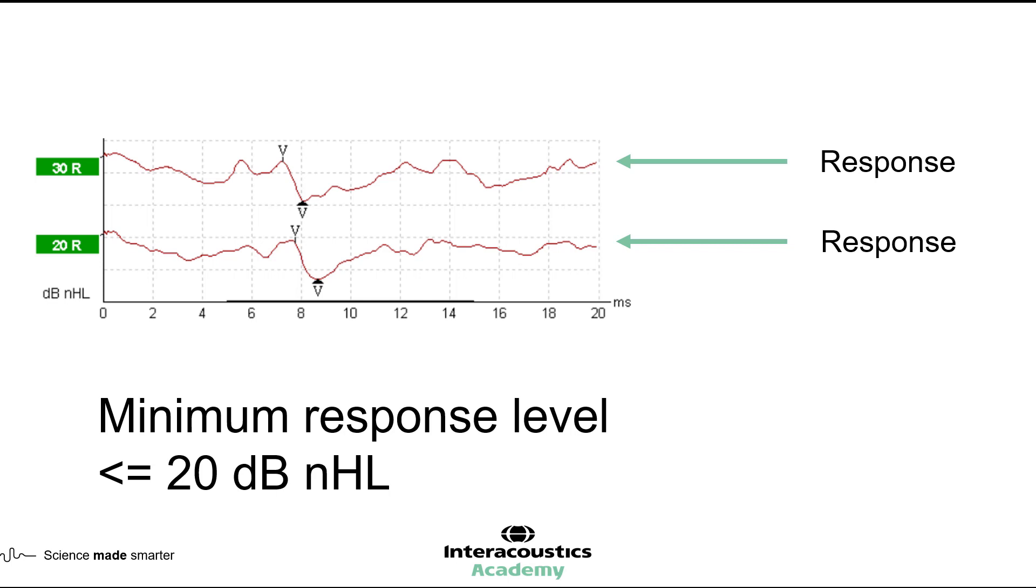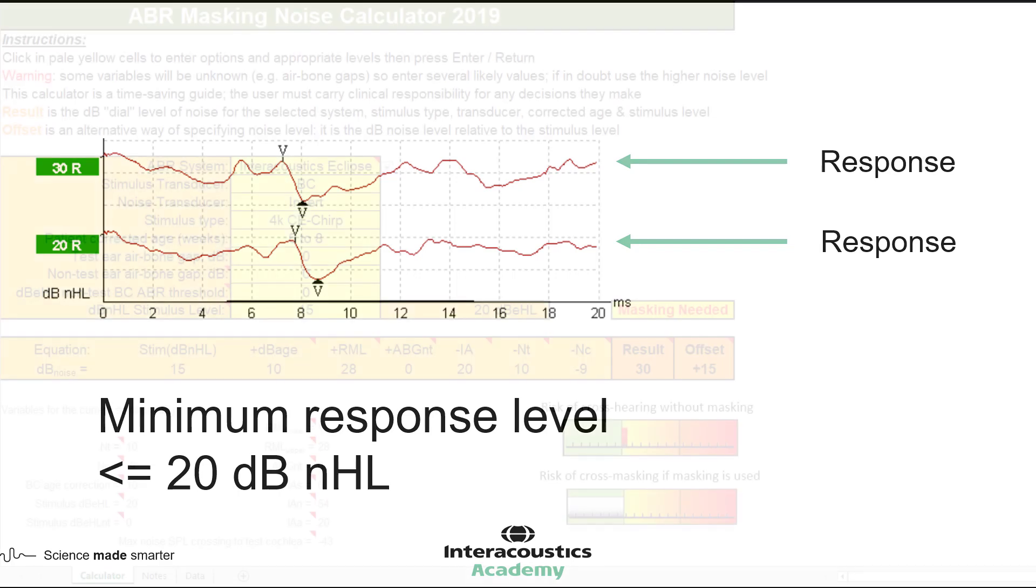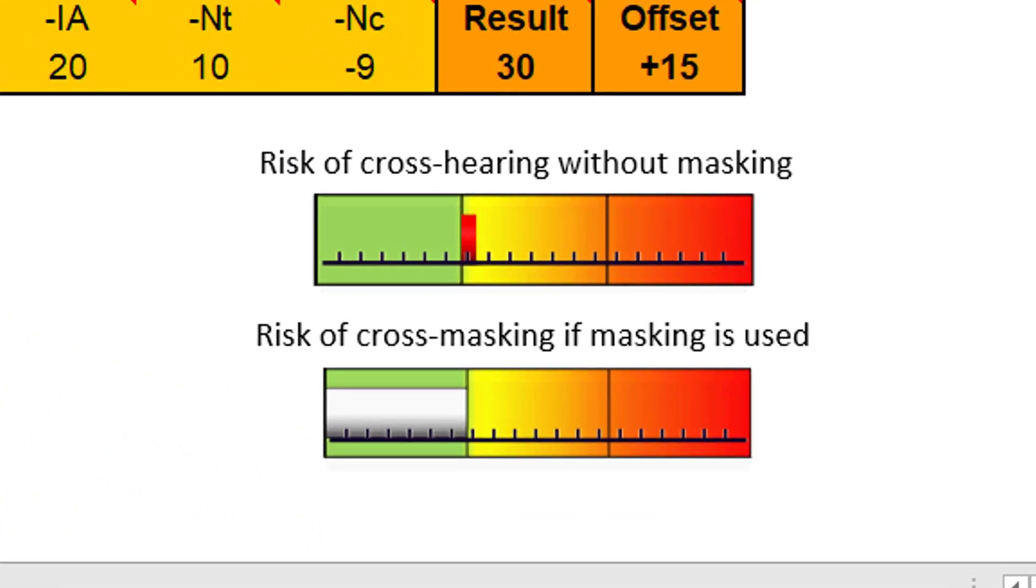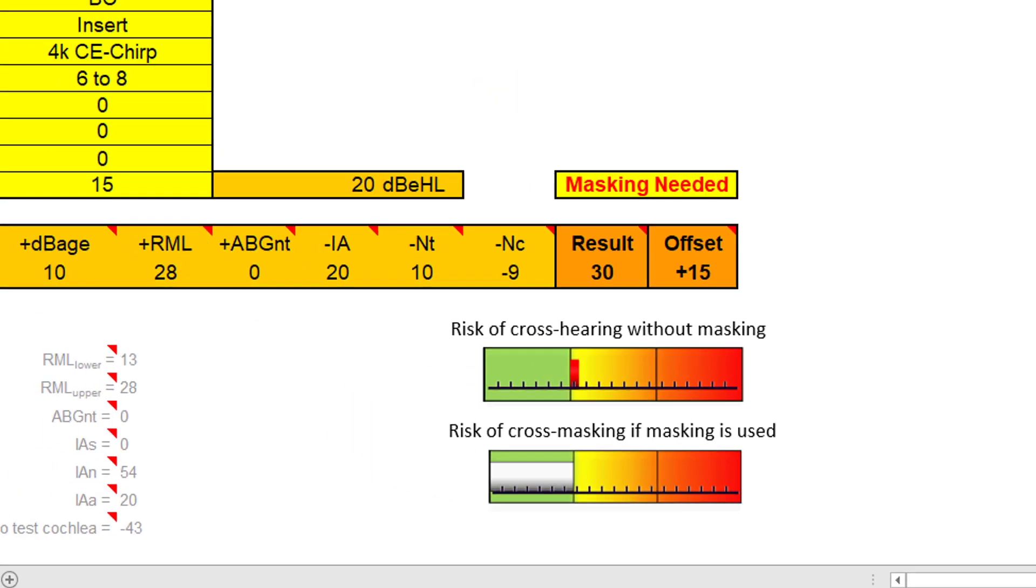You can also use other information such as tympanometry to guide you, however this is an inexact way of estimating these values. It is recommended that any such estimations are used to guide you as to the risk of cross-masking and the likelihood of cross-hearing, which are displayed within the calculator.